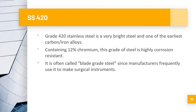SS 420 is a very bright steel and one of the earliest carbon-iron alloys. It contains 12% chromium and is highly corrosion resistant. It is often known as blade-grade steel since manufacturers frequently use it for surgical instruments.